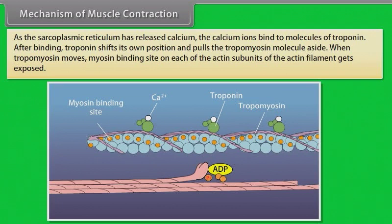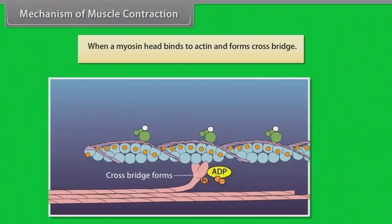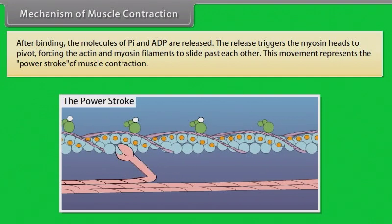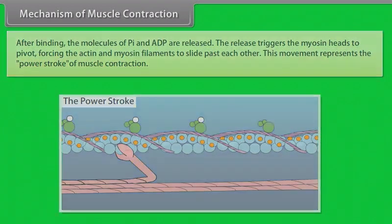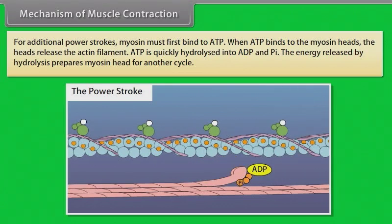As the sarcoplasmic reticulum releases calcium, the calcium ions bind to molecules of troponin. After binding, troponin shifts its own position and pulls the tropomyosin molecule aside. When tropomyosin moves, the myosin binding site on each of the actin subunits of the actin filament gets exposed. When a myosin head binds to actin and forms a cross bridge, the molecules of Pi and ADP are released. The release triggers the myosin heads to pivot, forcing the actin and myosin filaments to slide past each other — this movement represents the power stroke of muscle contraction.